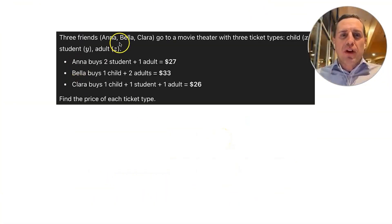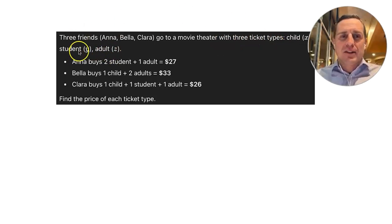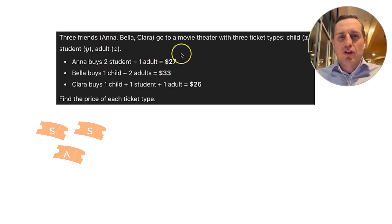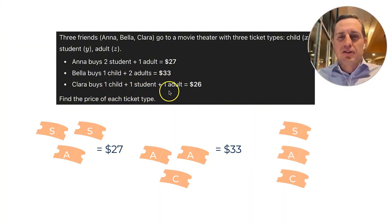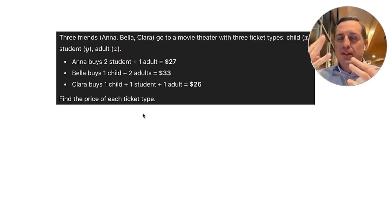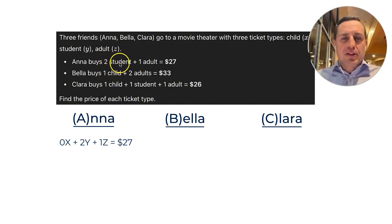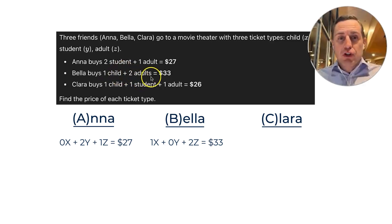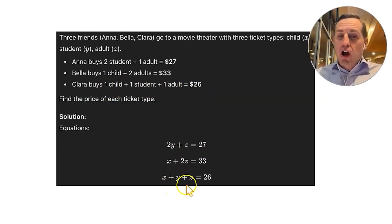Last problem: three friends — Anna, Bella, and Clara — go to a movie theater with three ticket types: child (X), student (Y), and adult (Z). Anna buys 2 student and 1 adult tickets for $27; Bella buys 1 child and 2 adult tickets for $33; Clara buys 1 child, 1 student, and 1 adult ticket for $26. This gives us: 2Y plus Z equals 27; X plus 2Z equals 33; X plus Y plus Z equals 26.